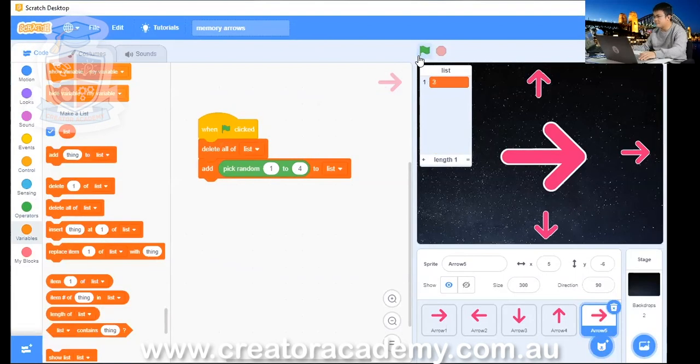Every time I click on the flag, there's just one random number between one and four in the list. Now for our puzzle game, we want to make it so that you don't just remember one item. Let's start off with something simple, let's start off with three.